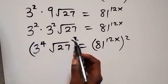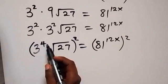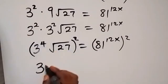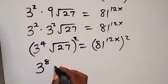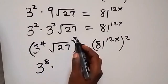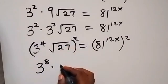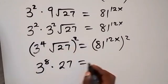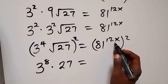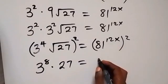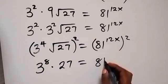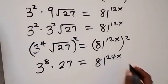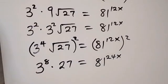That gives us 3 raised to power 8. Then times the square — the square cancels the square root — then times 27, which equals 81 raised to power 24x. So the next step is to express everything to base 3.